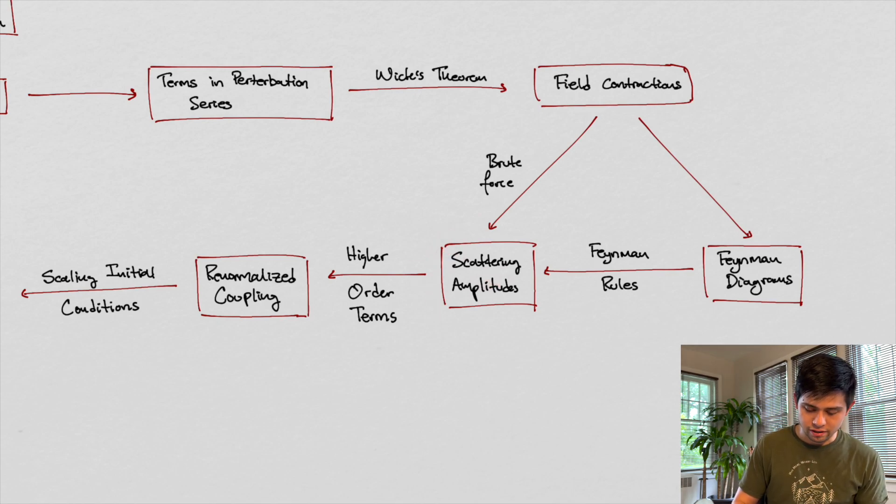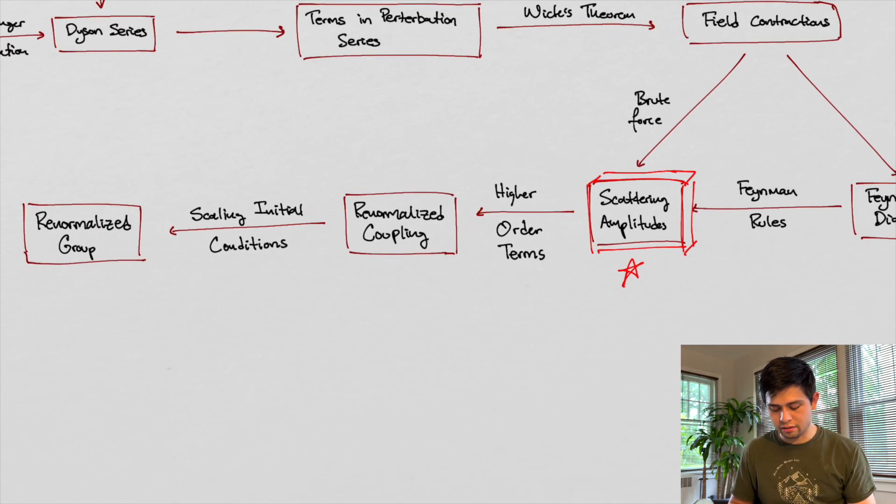But scattering amplitudes are the name of the game here, right? I'll do this. Scattering amplitudes are the name of the game. This is the end goal. Okay. And then from the scattering amplitudes, if we include higher order terms, we were able to get renormalized coupling, right? So we have these, within the scattering amplitudes, we have the coupling constants. The coupling constants tell us something about the degree to which higher order approximations are useful. Those are the constants that play a role in our scattering amplitudes. That's where the higher order terms come from.